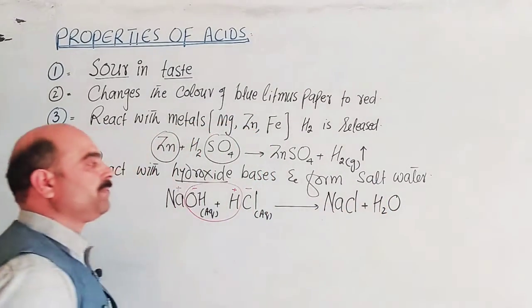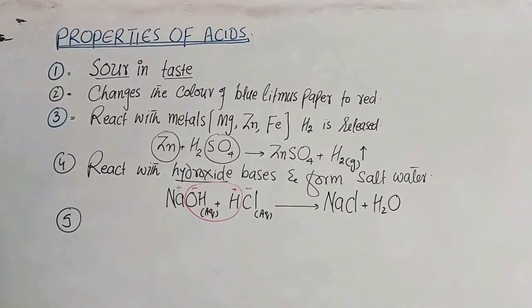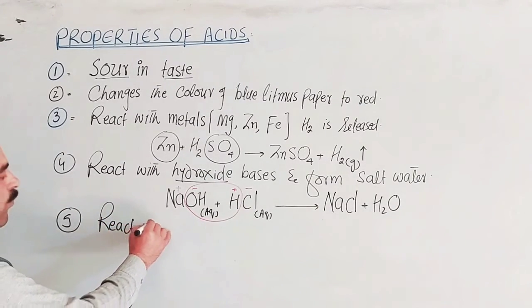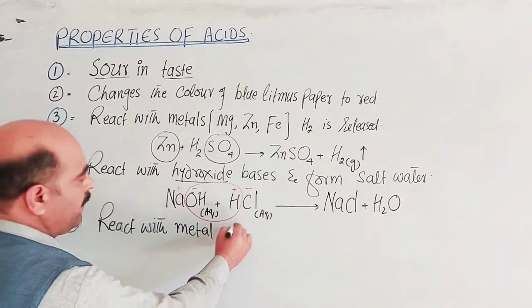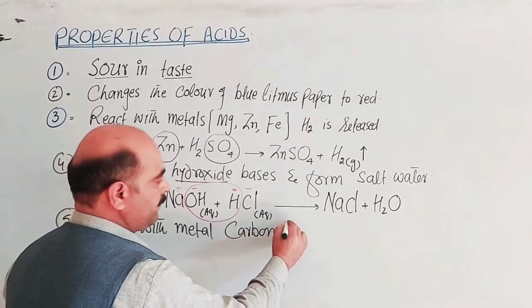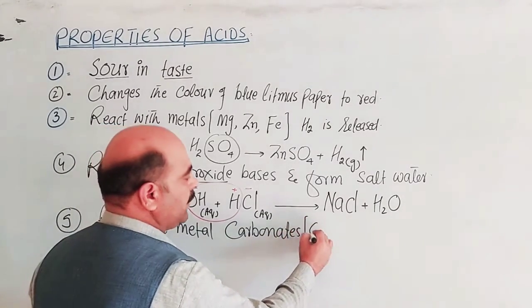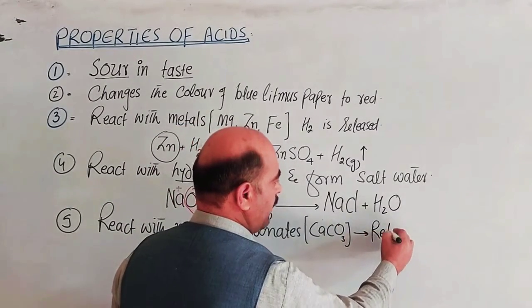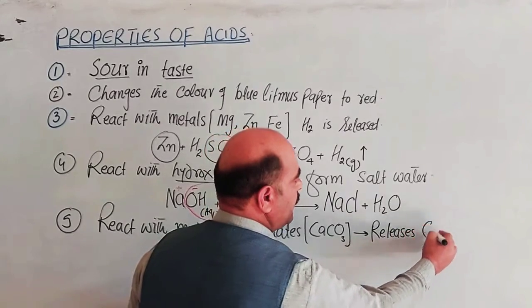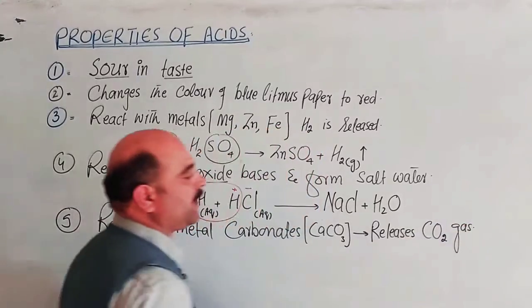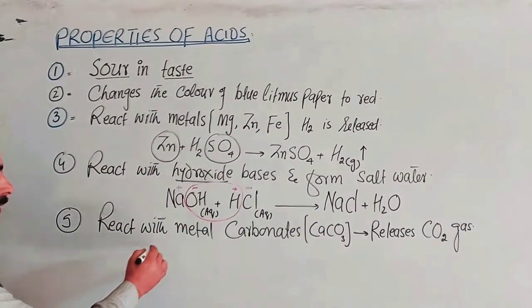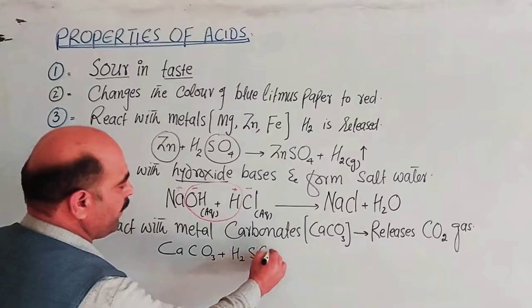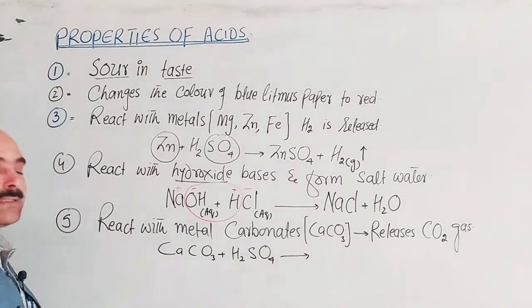The fifth property is that acids react with metal carbonates and release carbon dioxide gas. For example, calcium carbonate (CaCO₃) reacts with sulfuric acid (H₂SO₄). The reaction produces carbon dioxide gas (CO₂), which is released.